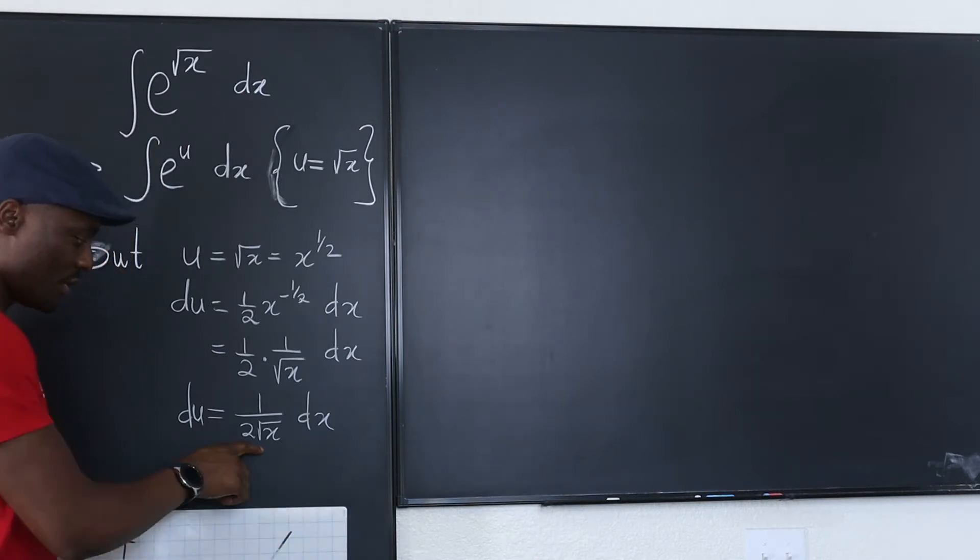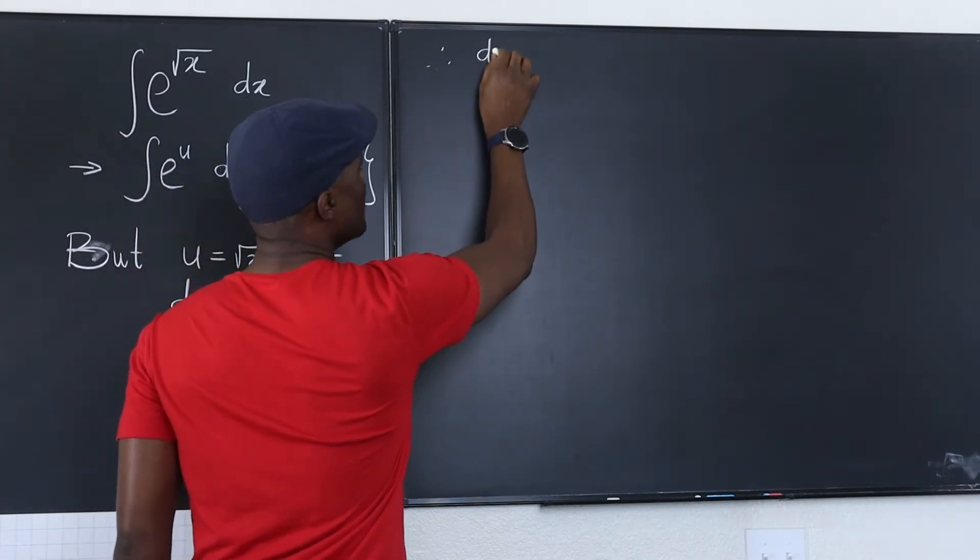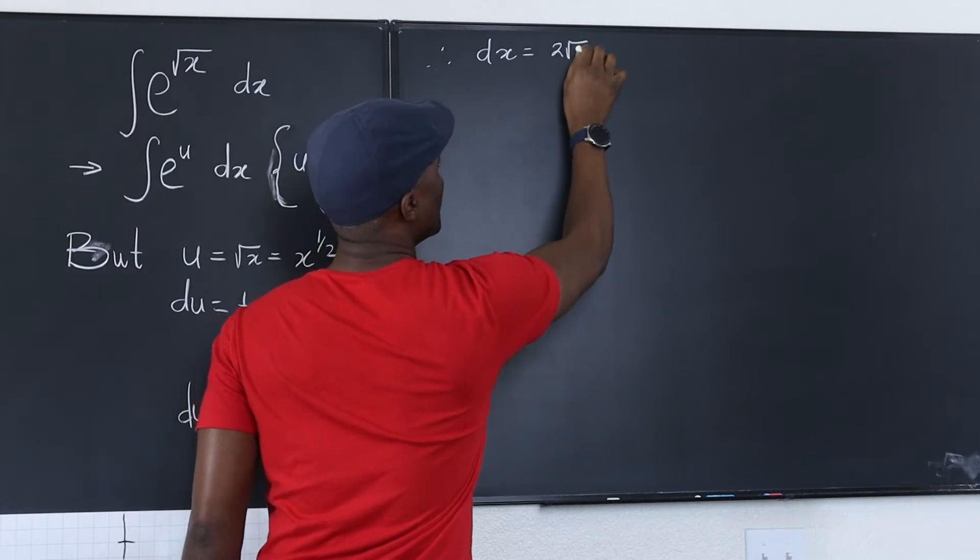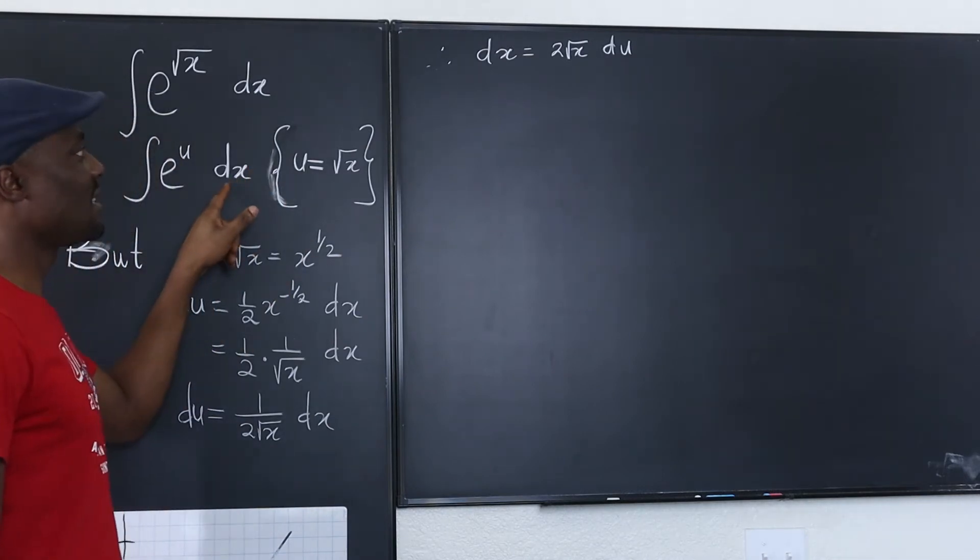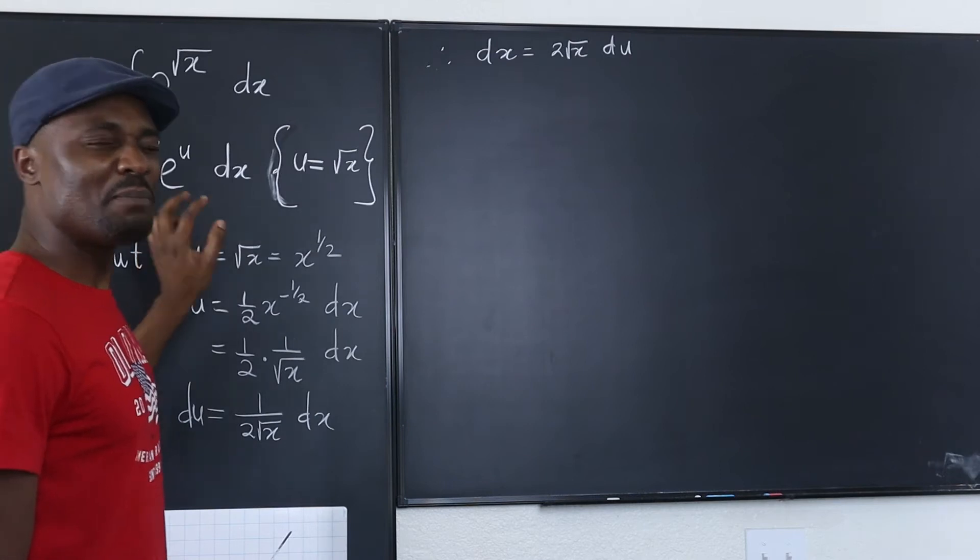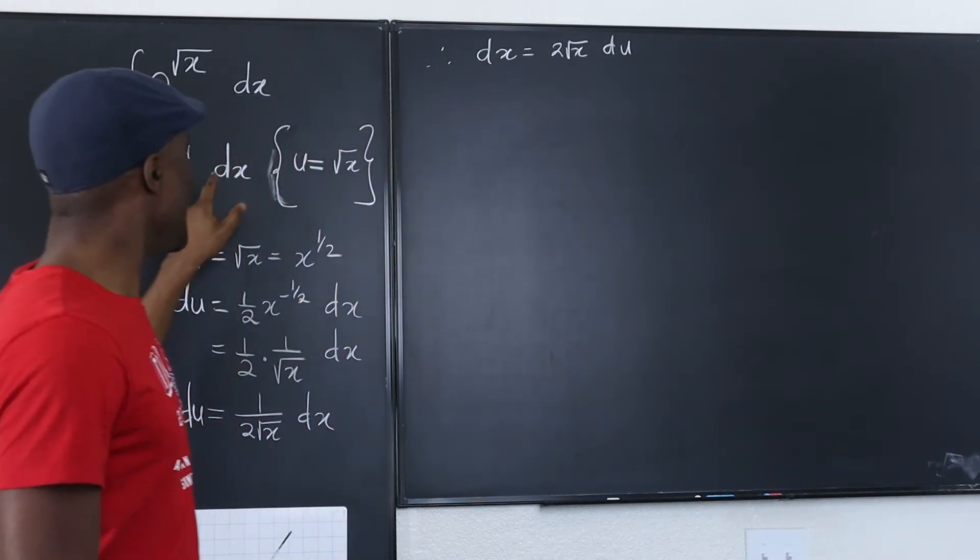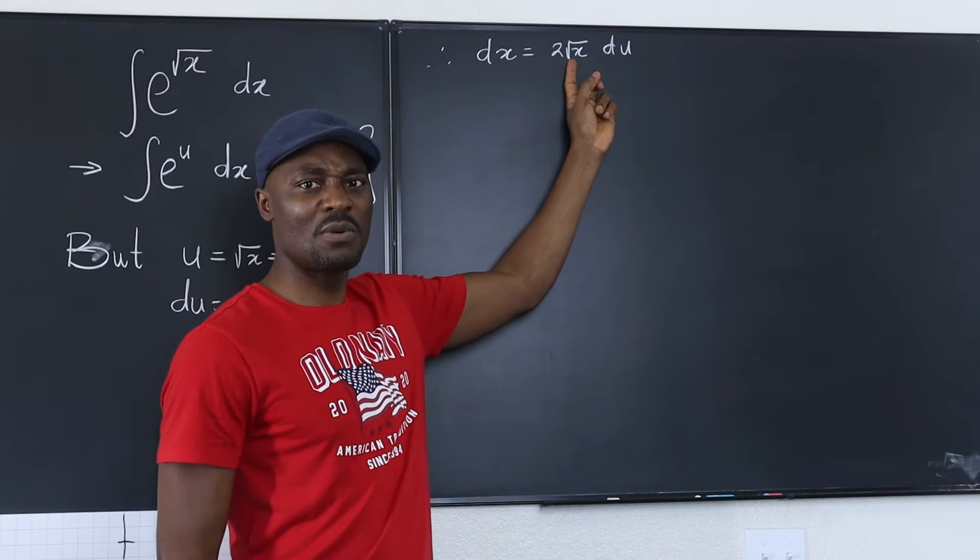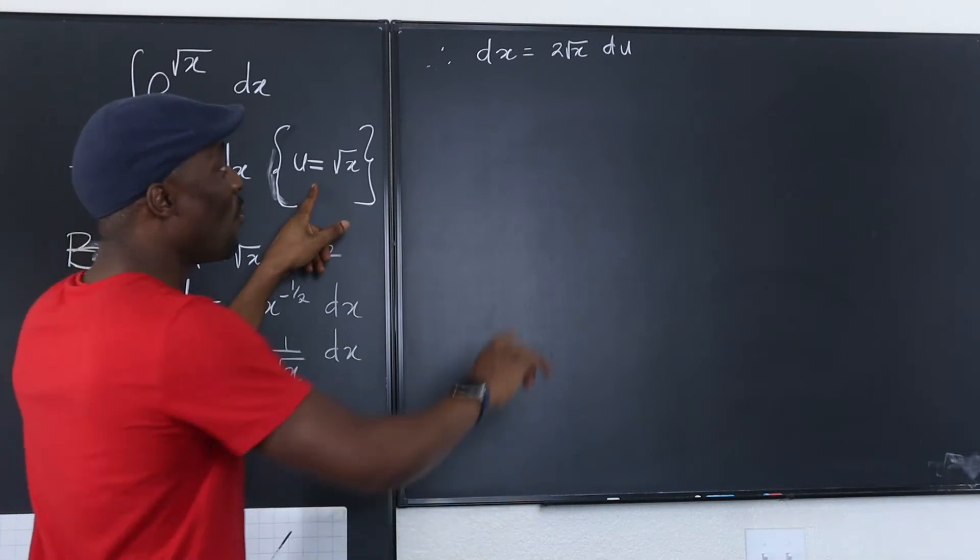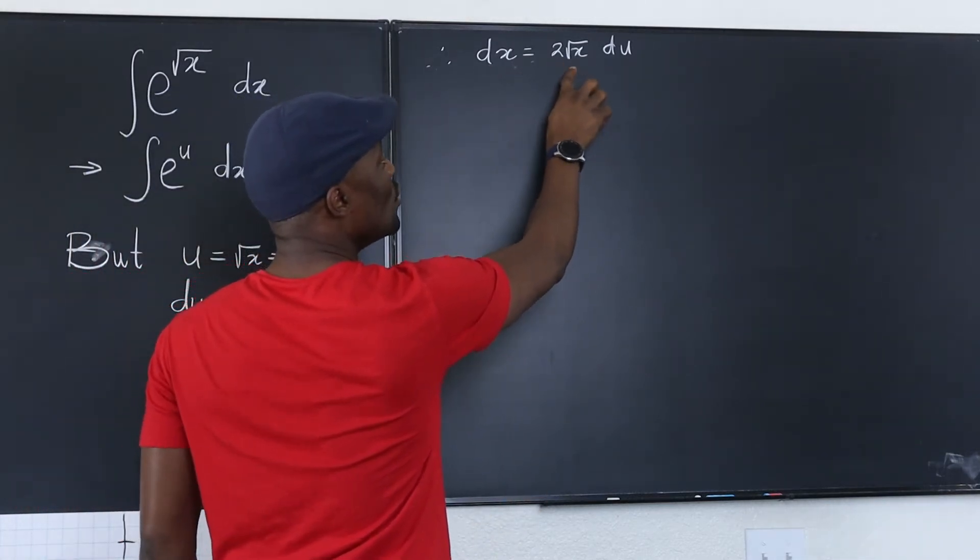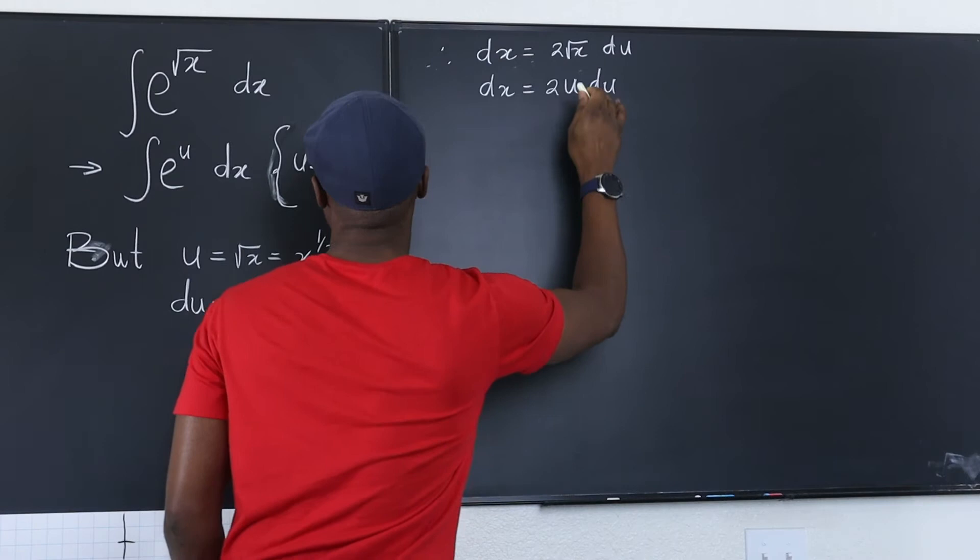So if we want to get dx we just multiply this by this. Therefore we have dx equals 2 square root of x du. Now we can go back and replace this dx. But we don't want to take square root of x back into a function that is using du. What exactly is the square root of x? Right there. So now what we have here is dx equals 2u du. Now we can take it back here.